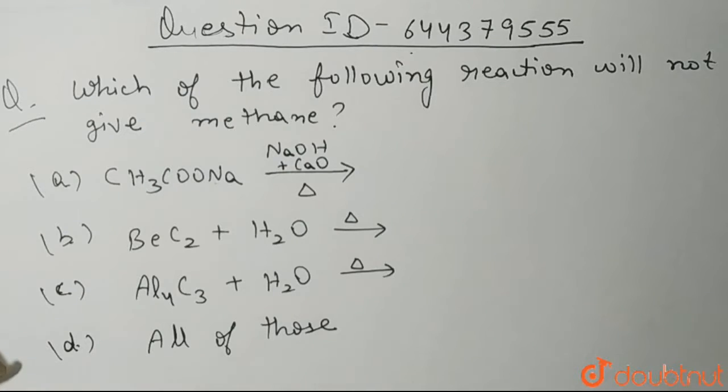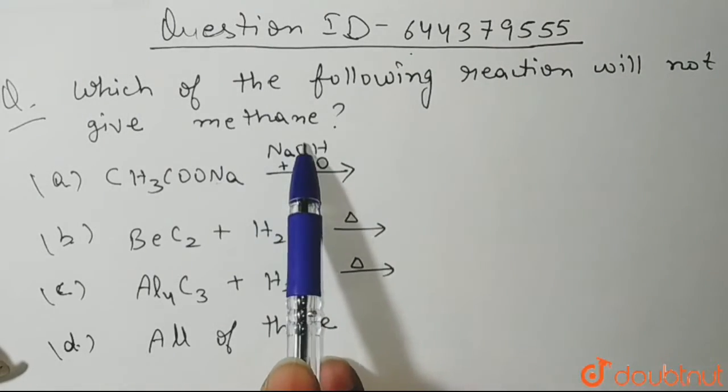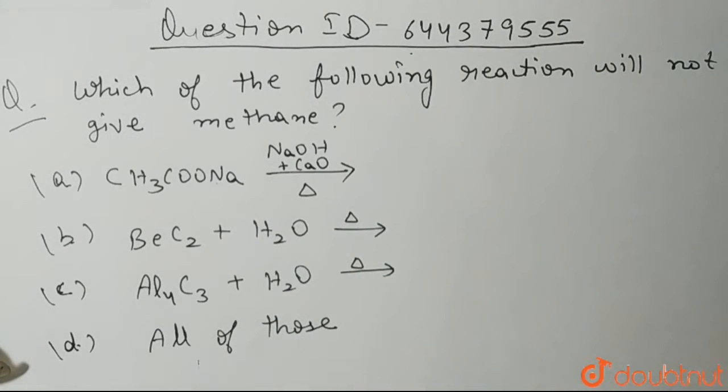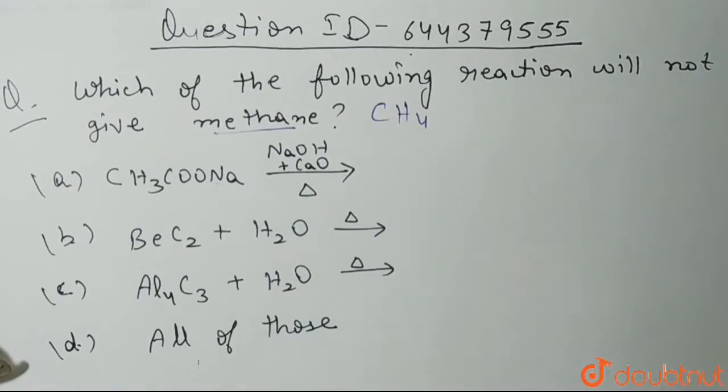Hello students, the question is: which of the following reactions will not give methane? So we need to tell out of all these four options which one will not give us methane. And what is methane? Methane is CH4 molecule.